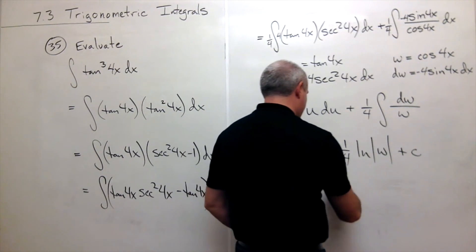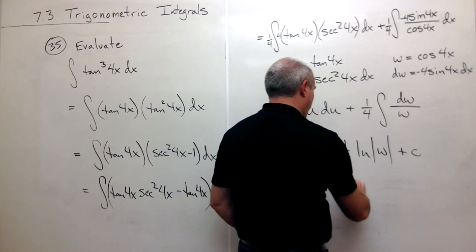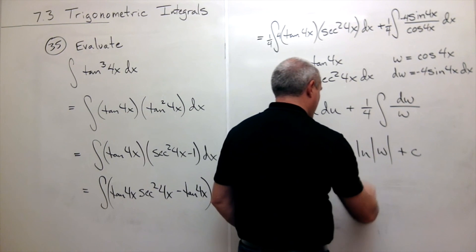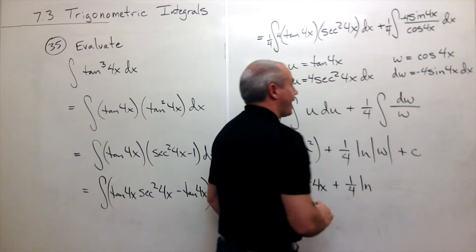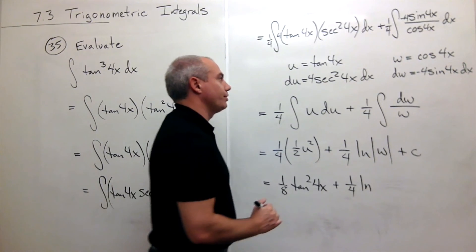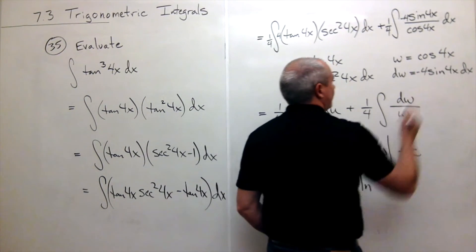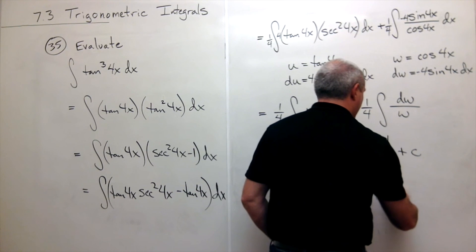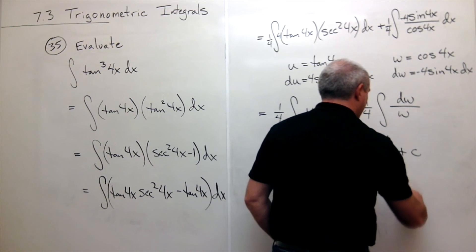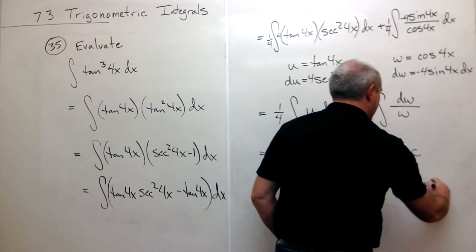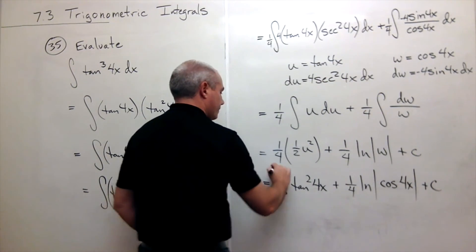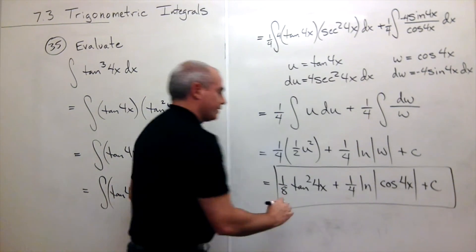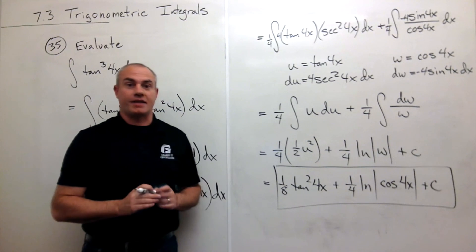Then I get plus 1 fourth ln of the absolute value of w. Well w is cosine of 4x. So this is absolute value of cosine of 4x plus c. And here is my antiderivative.